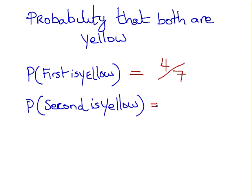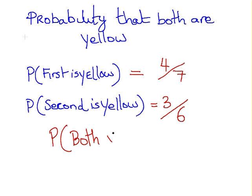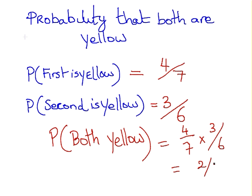Now, here's the second issue: the second ball is yellow. We've actually got six balls left, and out of those six, three of them are yellow. The probability that both balls are selected is the product of these two probabilities. So, the probability both yellow equals four over seven times three over six, and that is equal to two over seven.